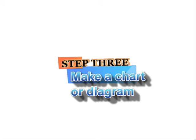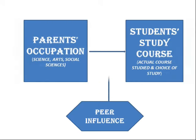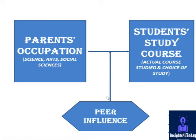Step 3: Make a chart or diagram based on what is a likely relationship between the variables of your study. Use arrows to show the relationship. For instance, using the same example, I'll make a simple diagram just like this. We can see how parents' occupation, which is the independent variable, could affect students' study courses. Peer influence could be a moderating factor, so I have also added it below, using an arrow to show how it could affect parents' occupation from influencing students' choice of study course.